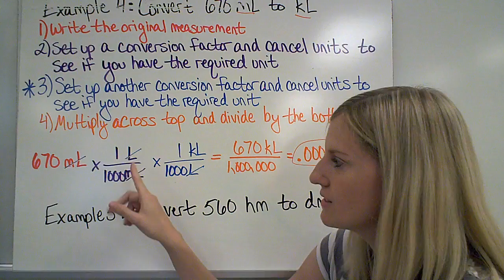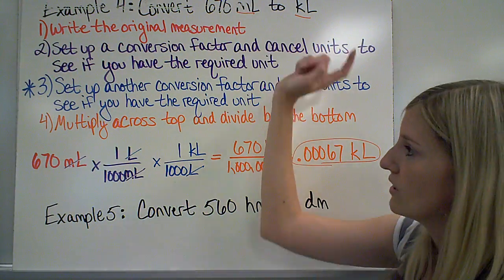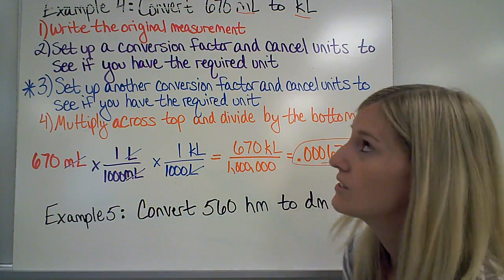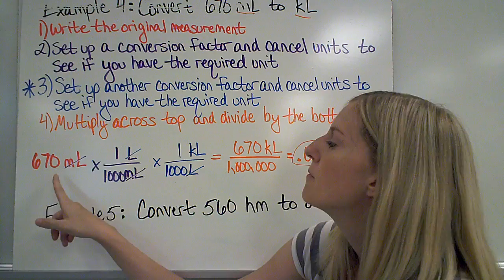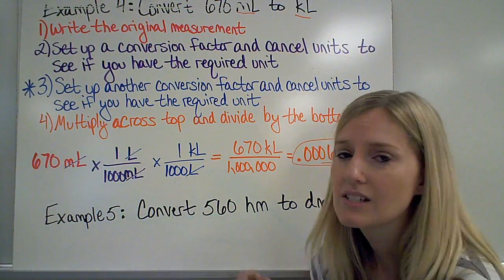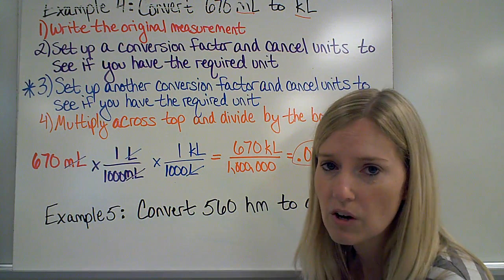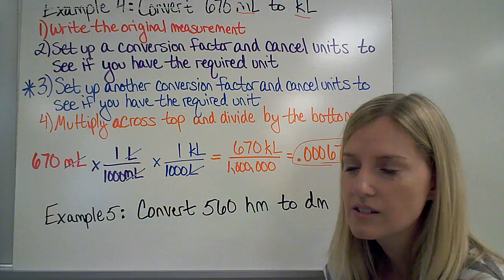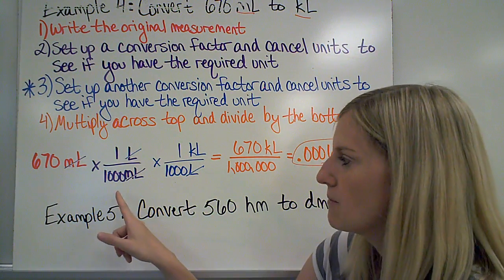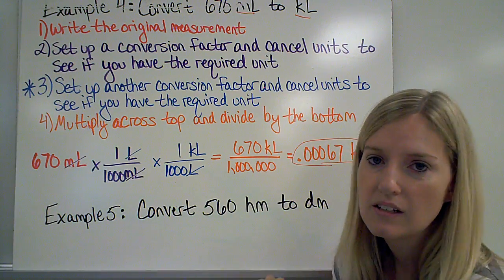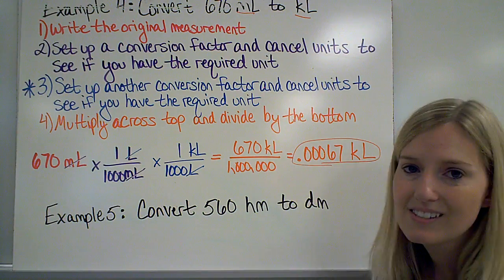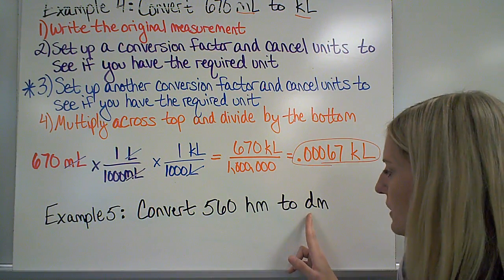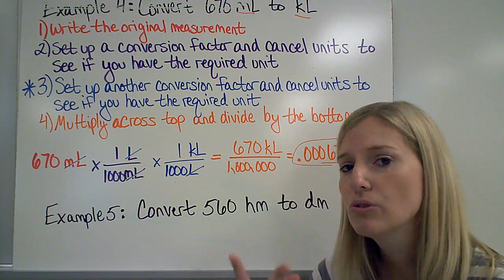When I cancel my milliliters, I'm just left in liters — that's not what I need for my answer. So I set up a second conversion factor to convert liters to kiloliters. Liters goes on the bottom because that's what I want to get rid of, and kiloliters goes on the top. I multiply across the top: 670 times 1 times 1, divided by 1,000 times 1,000 — which is 1,000,000. So 670 divided by 1,000,000 gives me 0.00067 kiloliters. If you're going from a prefix to a prefix, you will need two conversion factors.